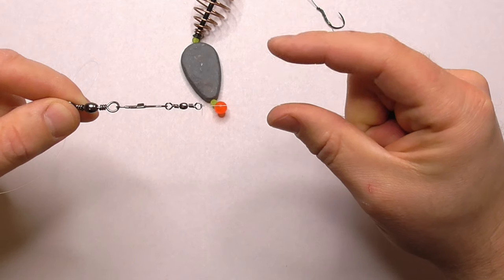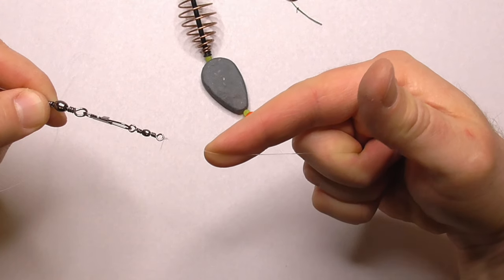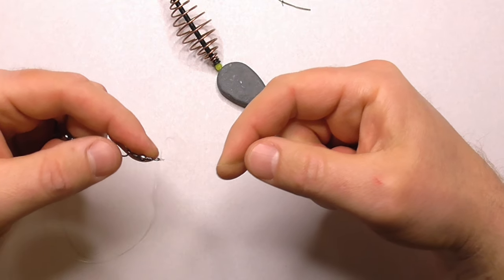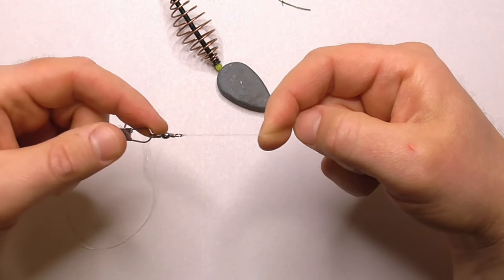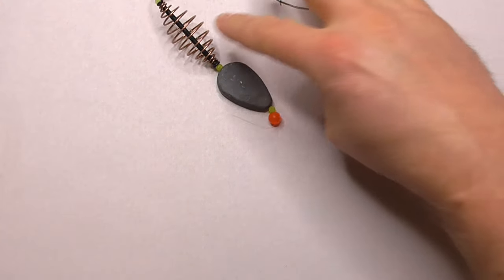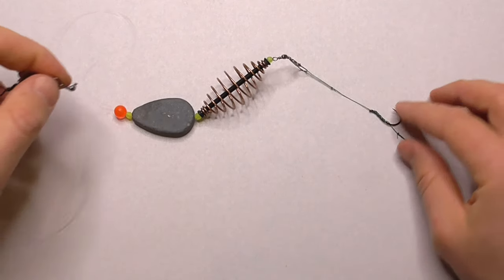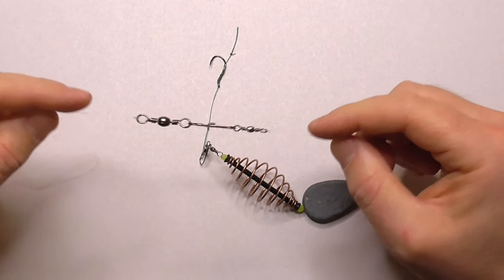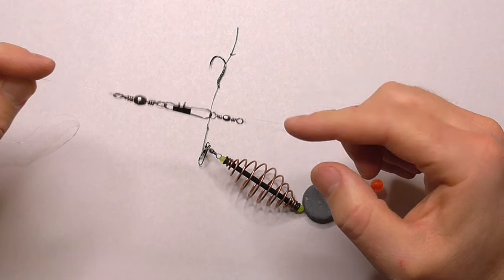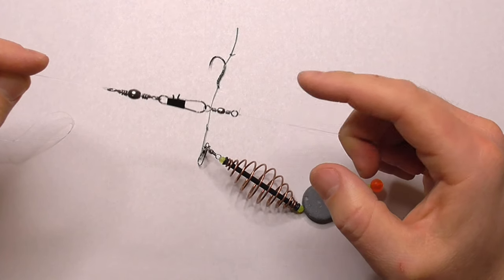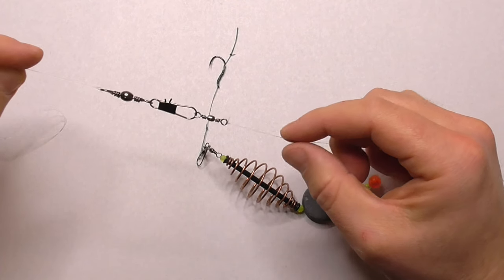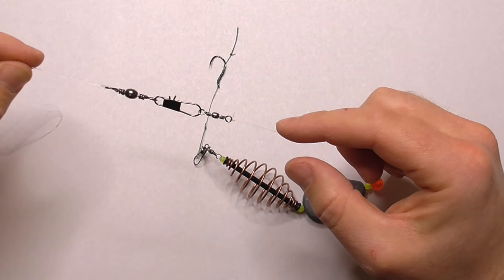So from the main line we'll go on to the bolt rig line here. So we've got another barrel swivel and for the bolt rig line he uses 12 pound black fire line. He says he likes that because it's waxy and it's kind of stiff and so this rig will lay nicely on the bottom with that kind of stiff waxy line. So we've got 15 pound main line and 12 pound line on the bolt rig, so this is the weak line here if it breaks. It's going to break here first most likely.